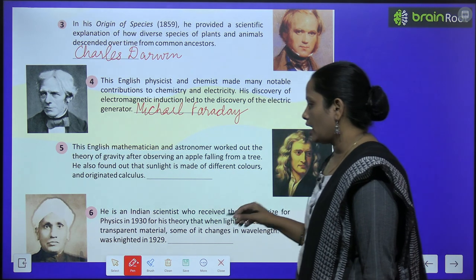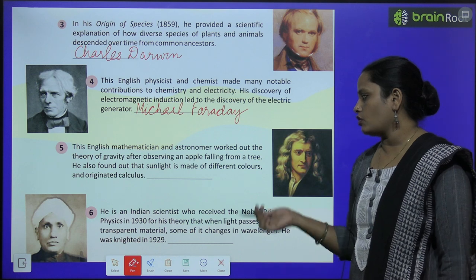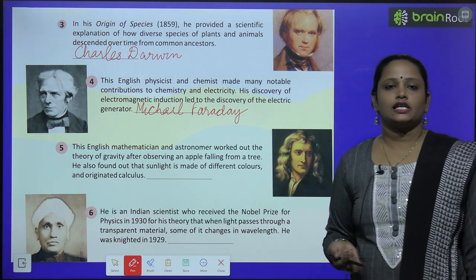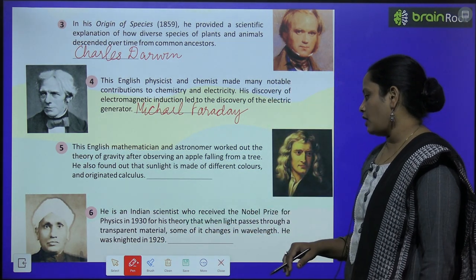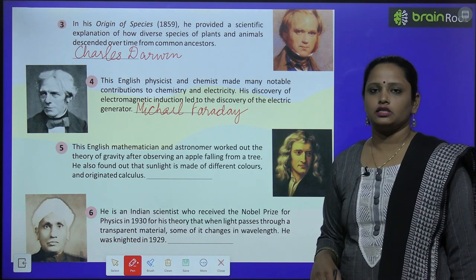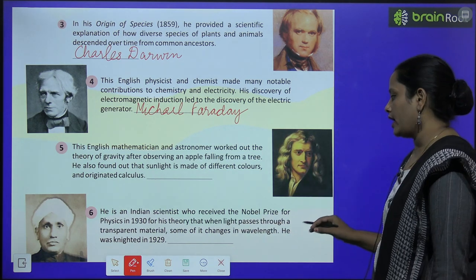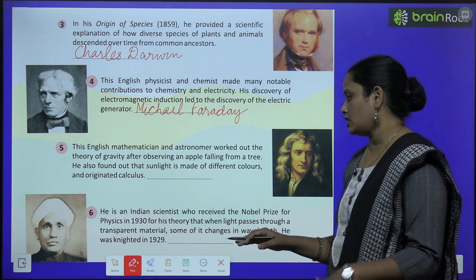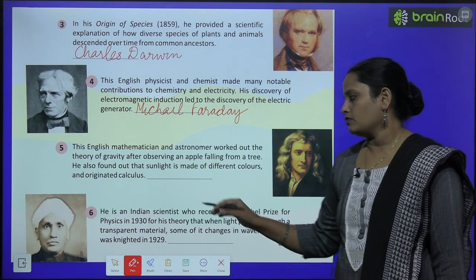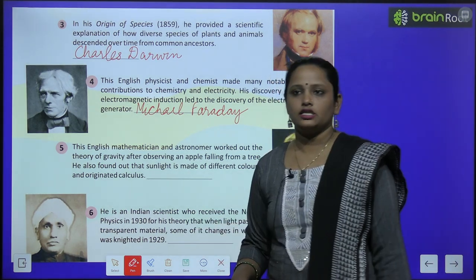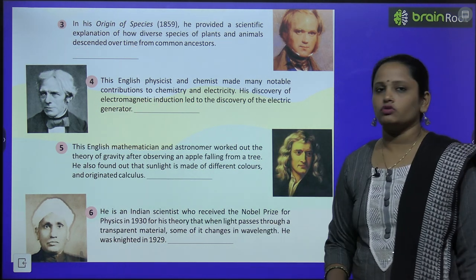He is an Indian scientist who received the Nobel Prize for Physics in 1930 for his theory that when light passes through a transparent material, some of it changes in wavelength. He was knighted in 1929. Find out the name of this person and write it here.